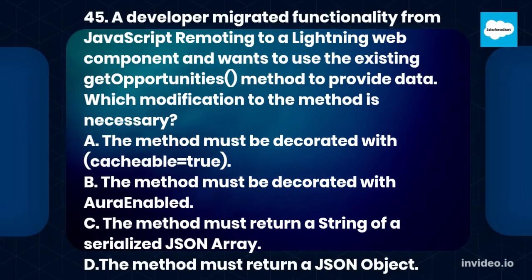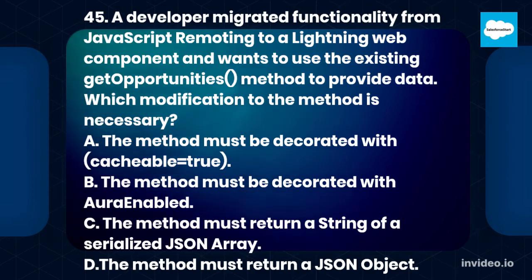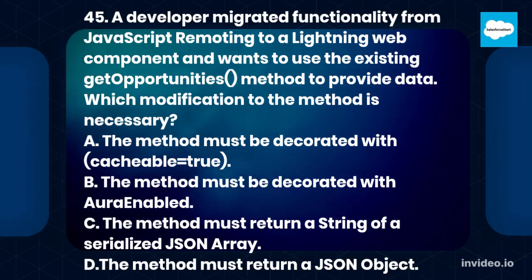Question 45: A developer migrated functionality from JavaScript remoting to a Lightning Web Component and wants to use the existing Get Opportunities method to provide data. Which modification to the method is necessary? A. The method must be decorated with cacheable=true. B. The method must be decorated with @AuraEnabled. C. The method must return a string of a serialized JSON array. D. The method must return a JSON object.